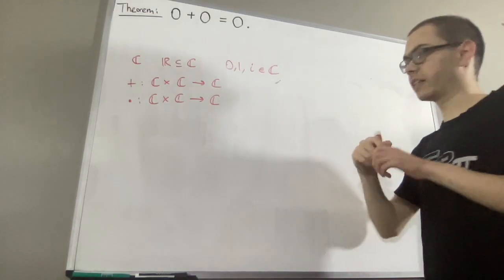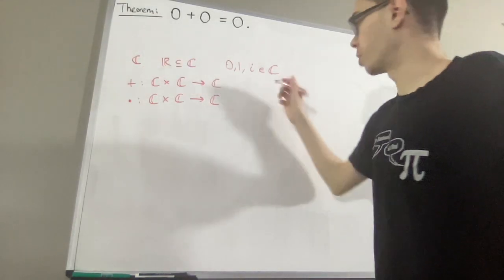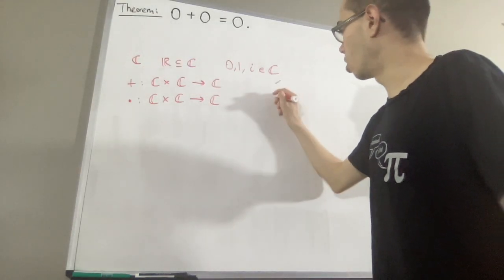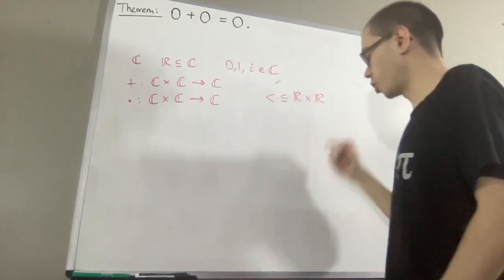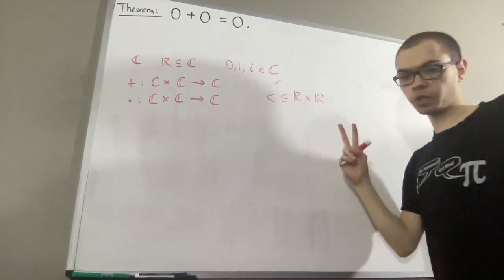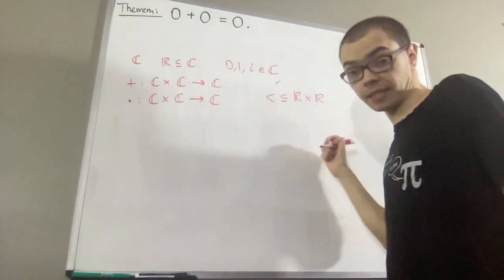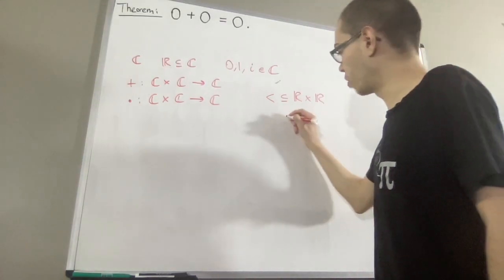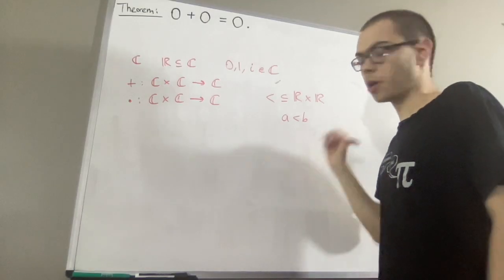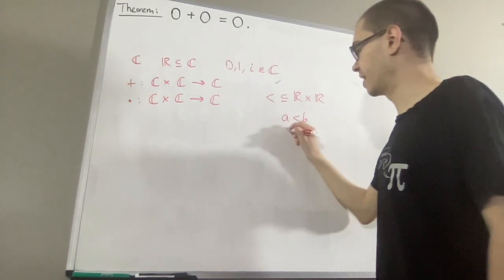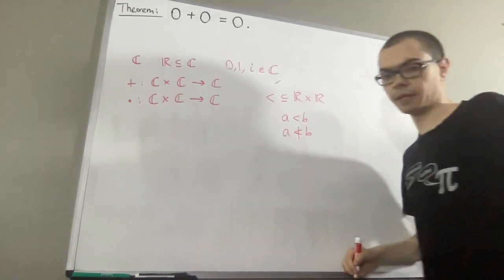And finally, we are given a relation on the set of real numbers called the less-than relation. So given any two real numbers a and b, it might be the case that a is less than b, and we write that like this. Otherwise, we say a is not less than b.